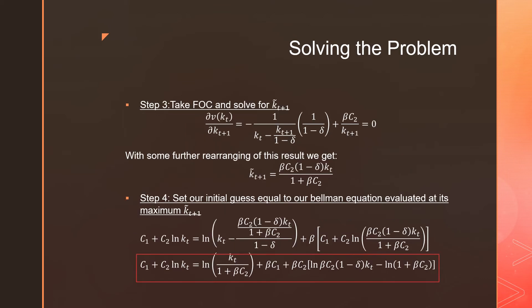Moving on to step number three, we're going to solve this and solve for K_{T+1} tilde. With some further rearranging of this first order condition, right, with our depreciation rate inside of it, we get the following. That is beta C_2 times (1 - delta) K_T all over (1 + beta C_2). Step number four is that we're going to set our initial guess to our Bellman equation evaluated at its maximum, which is K_{T+1} tilde. So this is just an intermediate step, but this is what we're doing. And we get the following mess over here at the bottom.